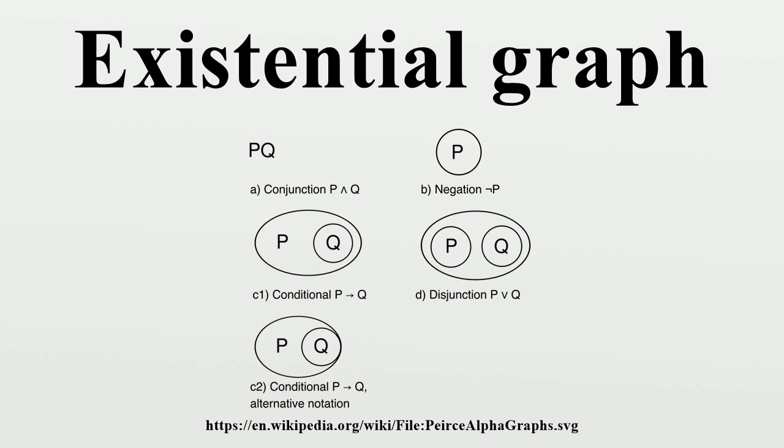The graphs: Peirce proposed three systems of existential graphs. Alpha, isomorphic to sentential logic and the two-element Boolean algebra. Beta, isomorphic to first-order logic with identity, with all formulas closed.